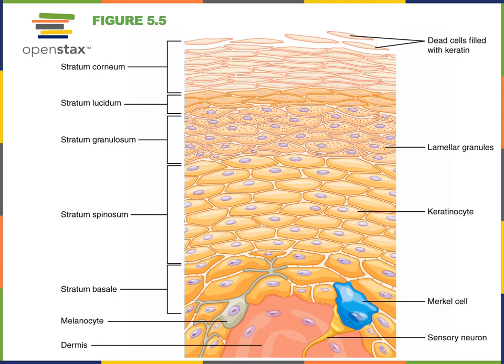Melanocytes are found in the deep layers of the epidermis, and they produce melanin, which is then taken up by keratinocytes. Langerhans cells are a type of leukocyte found in the epidermis, important for monitoring the skin for infections and helping to protect against skin cancer.